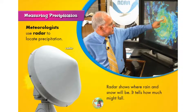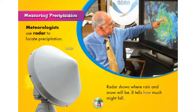Measuring precipitation. Meteorologists use radar to locate precipitation. Radar shows where rain and snow will be. It tells how much might fall.